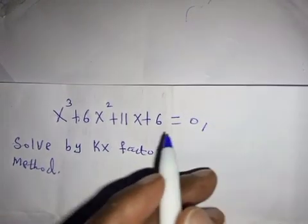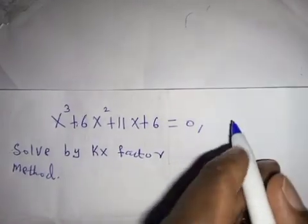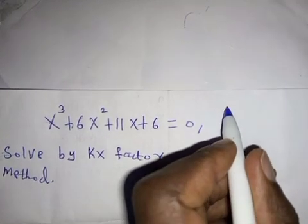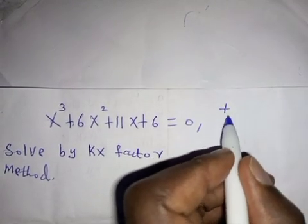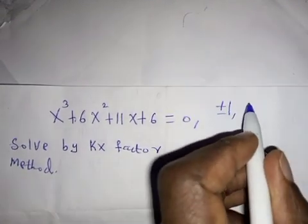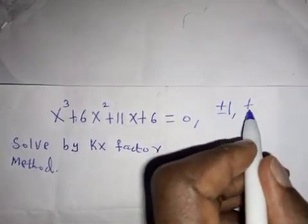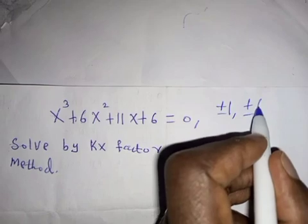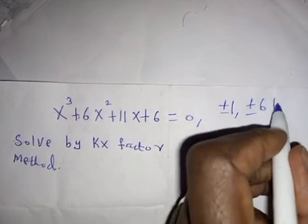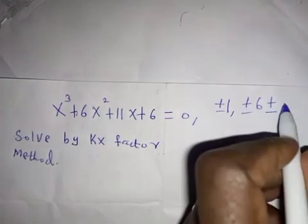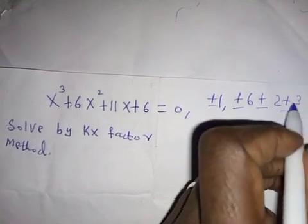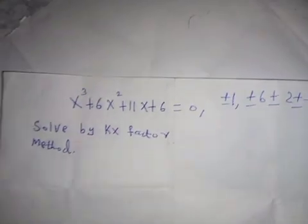First of all, let us see the factors of six. The factors of six are: plus or minus one, plus or minus six, plus or minus two, and plus or minus three.